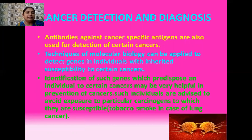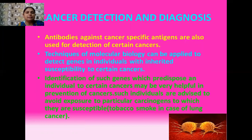Another technique is based on antigen-antibody interaction. Whenever a cancer-causing antigen or a cancer-specific antigen enters into your body, specific types of antibodies are also produced by your immune system. The doctors examine what type of antibodies are produced in your body, and in this way they detect what kind of cancer you are suffering from. There are also various techniques of molecular biology such as PCR — polymerase chain reaction — which is quite helpful in detecting cancers, or you can detect genes present in individuals with inherited susceptibility to certain types of cancers.